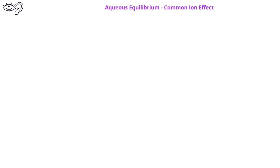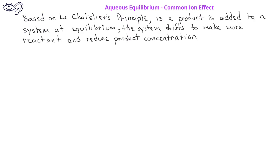In a previous video about equilibrium, we learned that, based on Le Chatelier's principle, if a product is added to a system in equilibrium, the system shifts in the direction to make more reactant and reduce the product concentration.